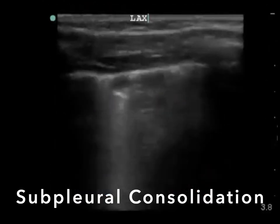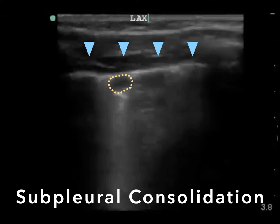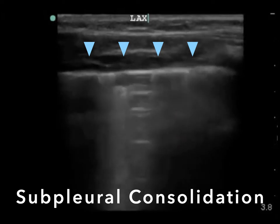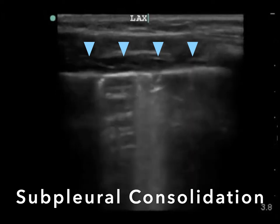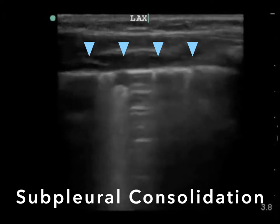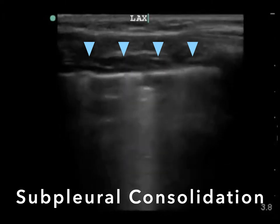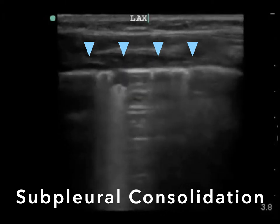Another pathologic finding to look for is subpleural consolidation — the presence of a hypoechoic area starting from the pleural line. These are usually small and can represent infection, most commonly viral pneumonia, but they can also appear with inflammation or pulmonary infarction.